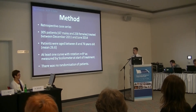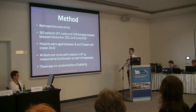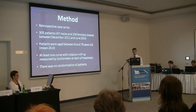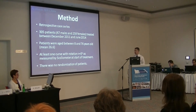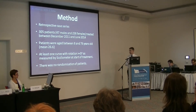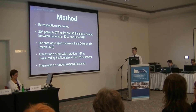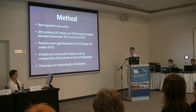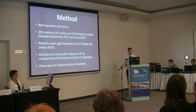We had 47 males, representing the general makeup of how scoliosis affects people. Patients were treated between December 2011 and June 2014, aged between 18 and 76. They must have had at least one curve with a rotation of greater than or equal to 5 degrees, as measured by scoliometer at the start of treatment.